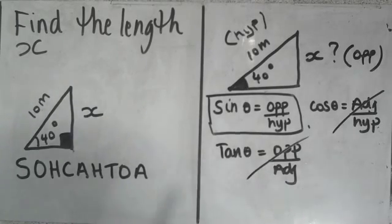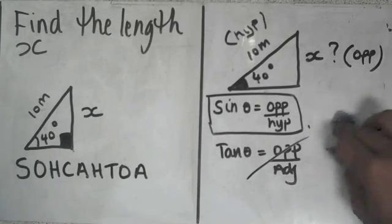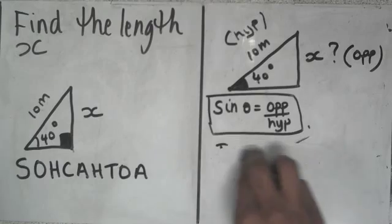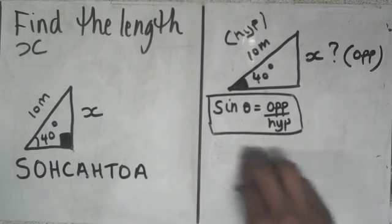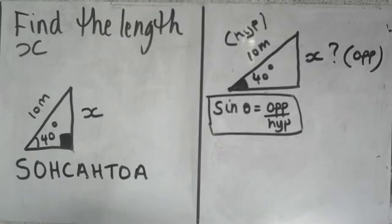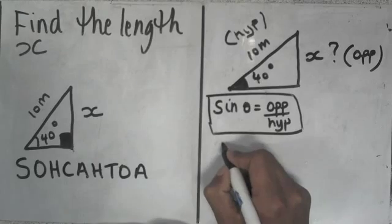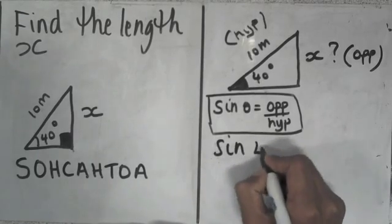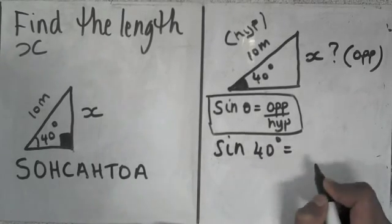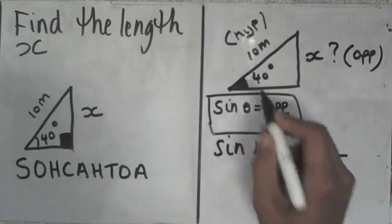Alright, so let's go ahead and use sine and work out our missing side. Theta is equal to 40 degrees, so I can say that sine 40 degrees is equal to the opposite side. The opposite side is x, and the hypotenuse is 10.